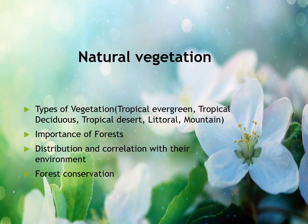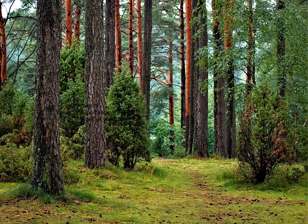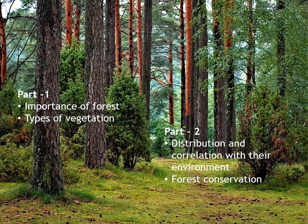Today's class is on Natural Vegetation, and the scope of the chapter covers Types of Vegetation — Tropical Evergreen, Tropical Deciduous, Tropical Desert, Littoral and Mountain Forest, Importance of Forest, Distribution and Correlation with the Environment, and Forest Conservation. The chapter is a little lengthy and conceptual, so I've divided it into two parts. In Part 1 we'll be learning about the importance of forest and types of vegetation. In Part 2 we'll concentrate on distribution, correlation with the environment, and forest conservation. Today's class is Part 1.